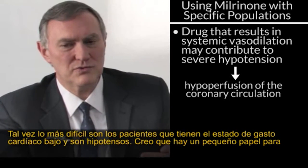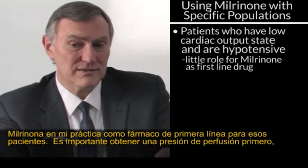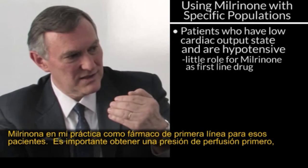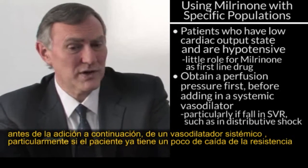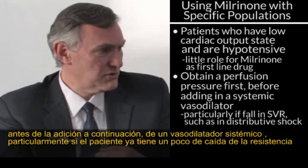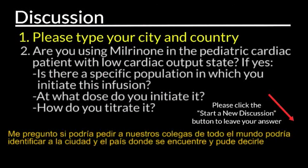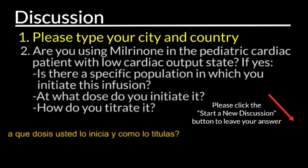Perhaps more difficult are patients with low cardiac output state who are also hypotensive. There is little role for milrinone in my practice as a first-line drug for those patients. It's important to obtain a perfusion pressure first before adding in a systemic vasodilator, particularly if the patient already has a fall in systemic vascular resistance related to, say, distributive shock. Could I ask our colleagues: are you using milrinone in the pediatric cardiac patient with low cardiac output state? If yes, in which specific population do you initiate this infusion, at what dose, and how do you titrate it?